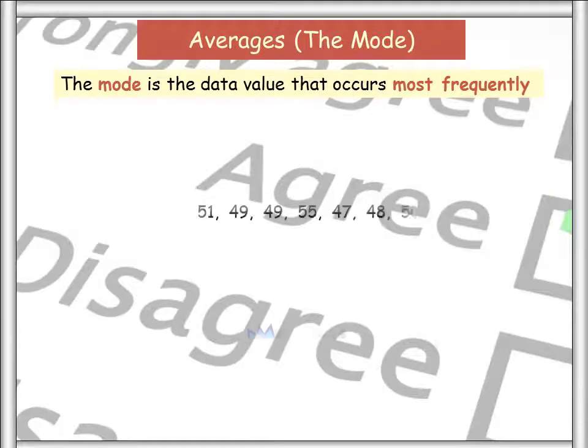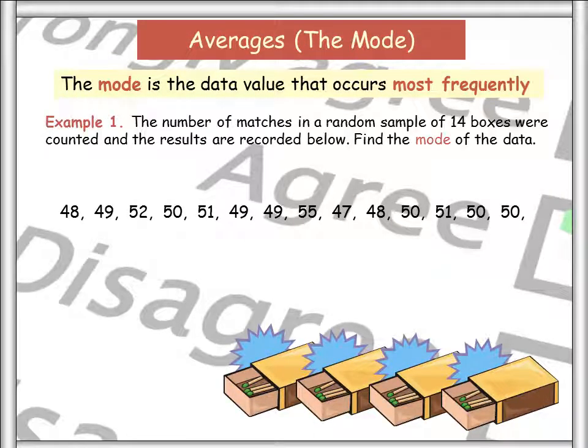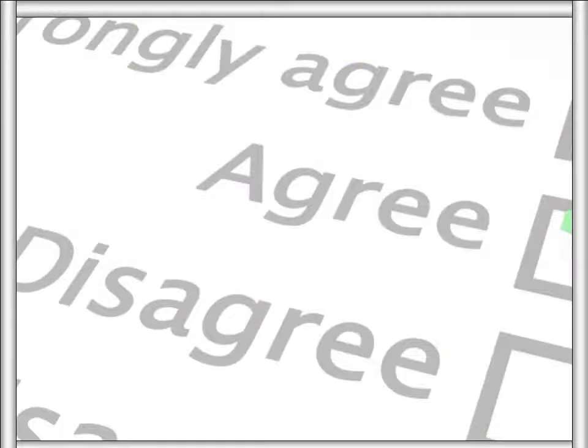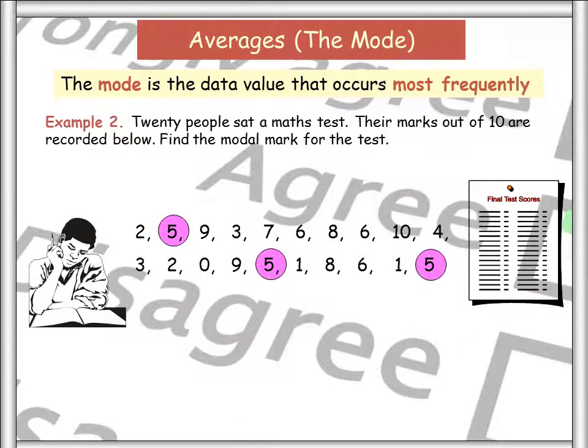So if we have a look here at how this works within the numbers, the mode is the number that occurs the most frequently. So if you look at the data set on the screen, the number 50 appears four times and therefore the mode is 50. If we look at a slightly more difficult data set, you will see that actually on this occasion, there are two modes. The mode is five and the mode is six.